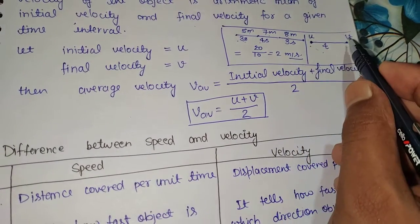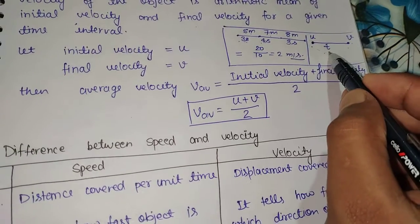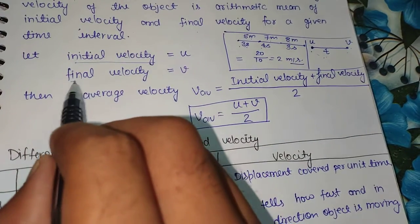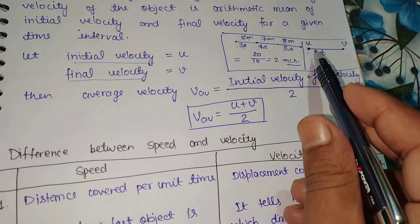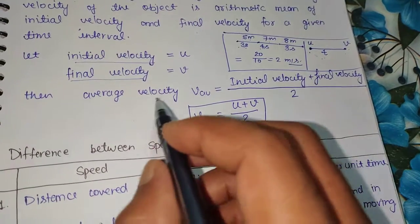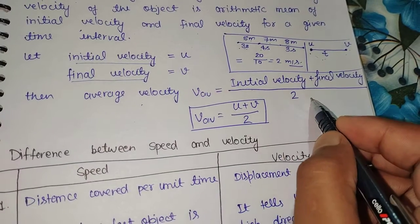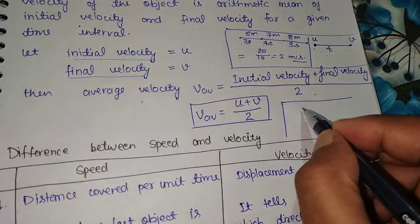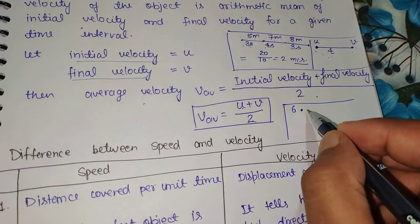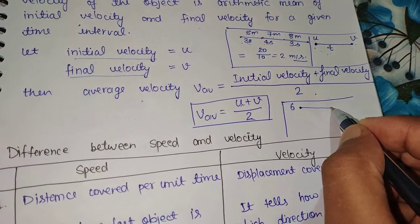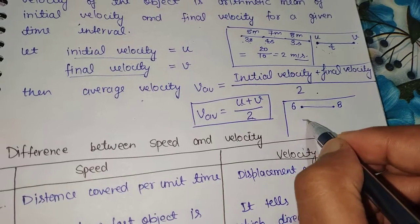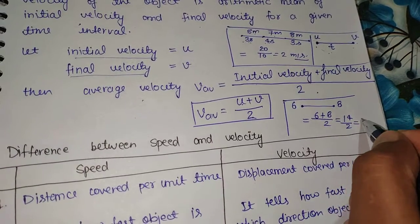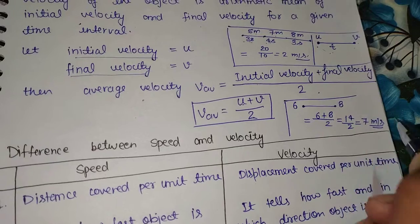In physics, initial velocity is represented by U, final velocity is represented by V, and time is represented by small t. So if an object's initial velocity U is 6 and final velocity V is 8, we add them and divide by 2: 14 upon 2, meaning the average velocity of that object is 7 meters per second.